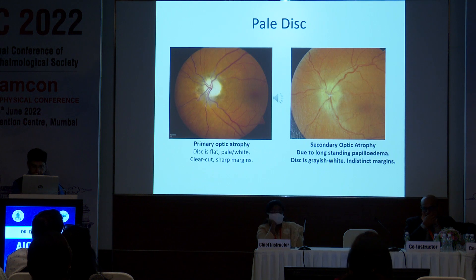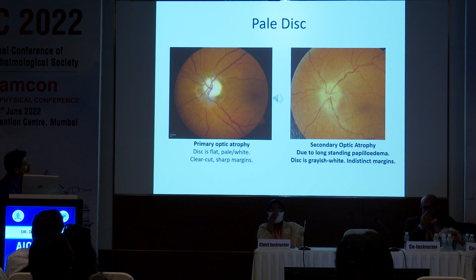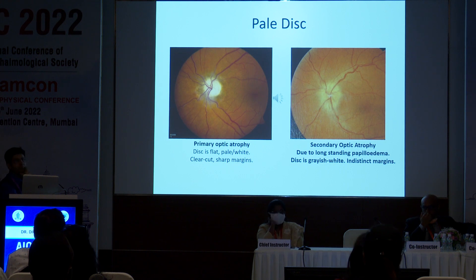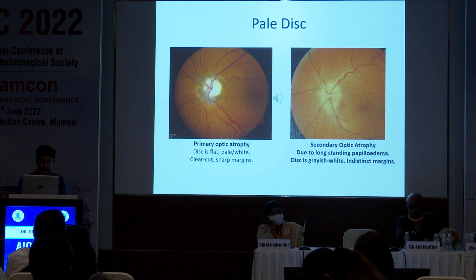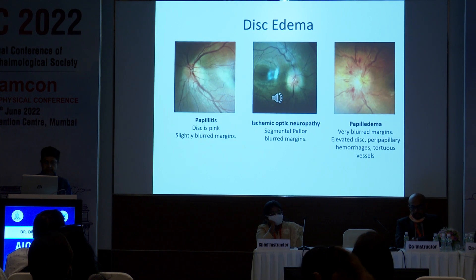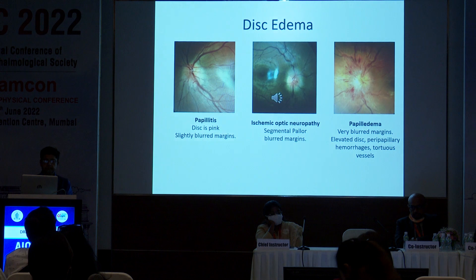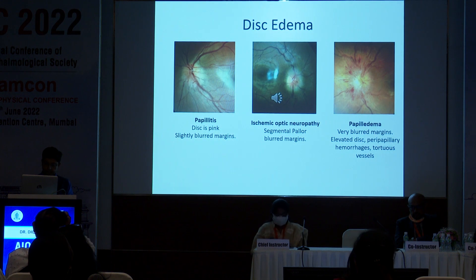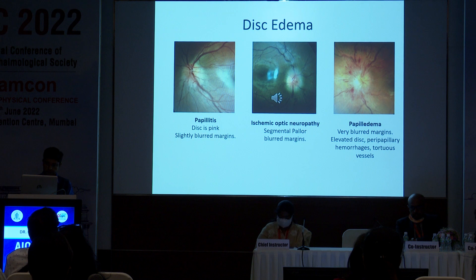If what you see in the fundus is a pale disc, try to classify it. Is it a primary optic atrophy or a secondary optic atrophy based on its features? If what you observe in the fundus is a swollen disc, look at whether it is unilateral or bilateral, and whether it is hyperemic or pallid. Here are some examples of disc edema.